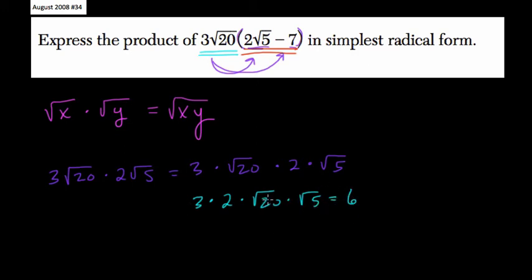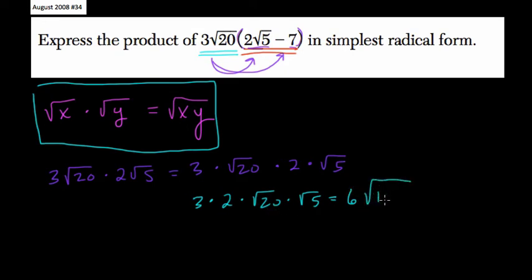But this is really nice, because 3 times 2 is 6, and the square root of 20 times the square root of 5, just like the square root of x times the square root of y equals the square root of x times y. This is equal to the square root of 20 times 5, or 100. So we have 6 times the square root of 100, which is just 6 times 10, or 60. That's our first part.